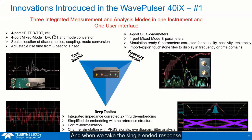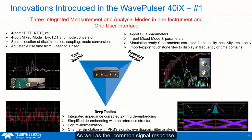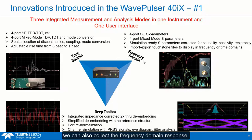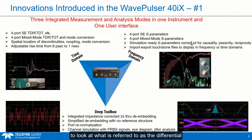When we take the single-ended response and turn it into the mixed-mode response, we can look at the differential TDR response — either the reflected or the transmitted signals — as well as the common signal response and even the mode conversion terms. In addition, in the same instrument, we can also collect the frequency-domain response, which are really the S-parameters. We can get the S-parameters as single-ended S-parameters up to four ports, or we can convert the single-ended S-parameters into the mixed-mode S-parameters to look at what are sometimes referred to as the differential S-parameters.